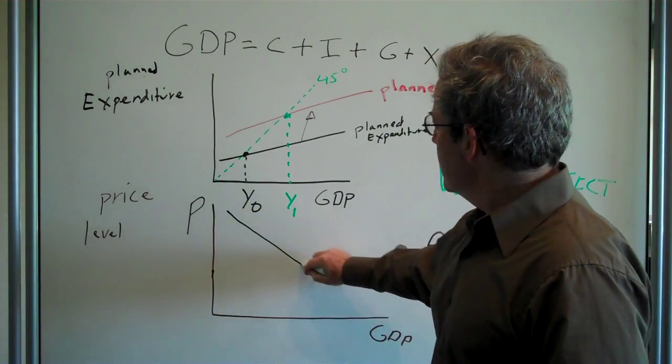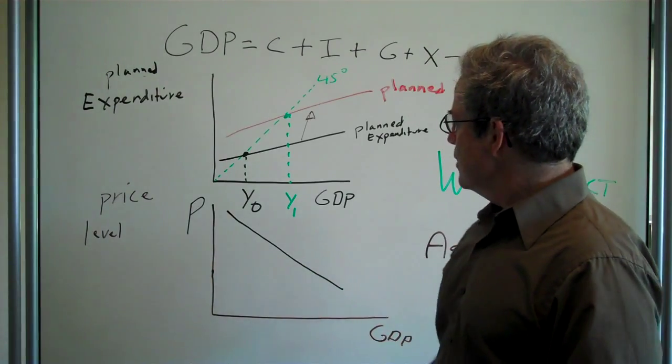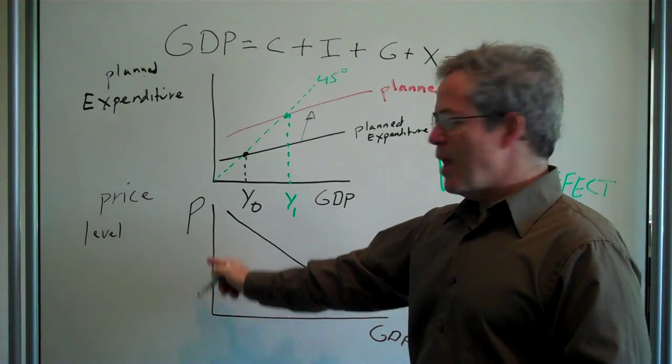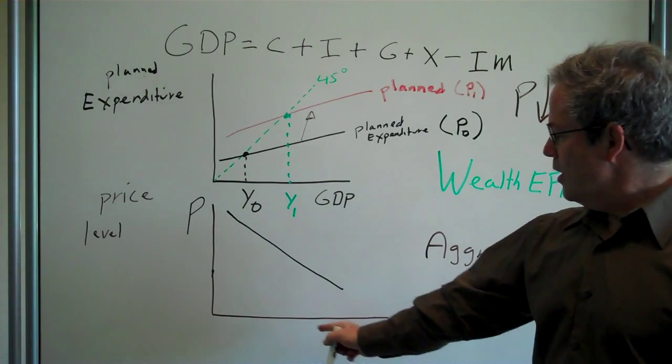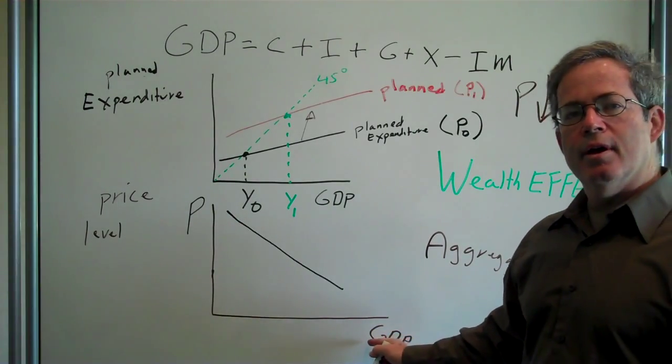And we can draw that line like that. When prices go down, GDP or demand for GDP goes up.